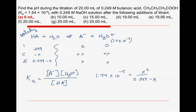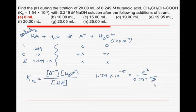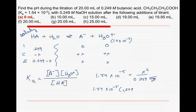Now let's make the assumption that X is very small compared to the amount that we started with, and we're going to ignore this term. So to solve for X, we would have 1.54 times 10 to the minus 5 times 0.249, and that is going to be equal to X squared.